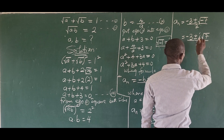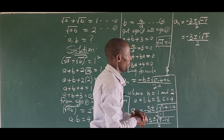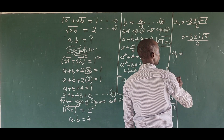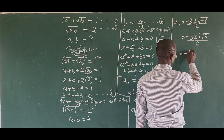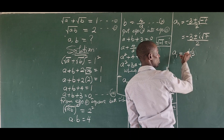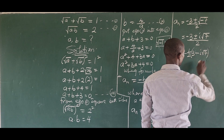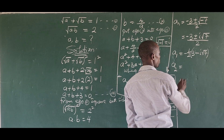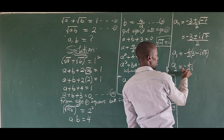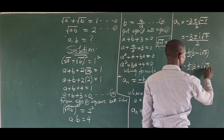Since a_n gives two roots, we split into a1 and a2. Taking the positive sign first: a1 equals minus one over two times bracket (three minus iota*sqrt(7)). Taking the negative sign: a2 equals minus one over two times bracket (three plus iota*sqrt(7)).